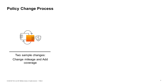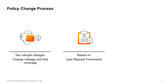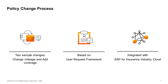Policy Change Process. Two sample processes — for changing mileage and for adding coverage — are provided based on the sample auto insurance product. The policy change process is based on the user request framework, which makes it easy for business users to configure from back-office. There is also the possibility to use this feature integrated with SAP for Insurance. For each step, there is an implemented integration point.